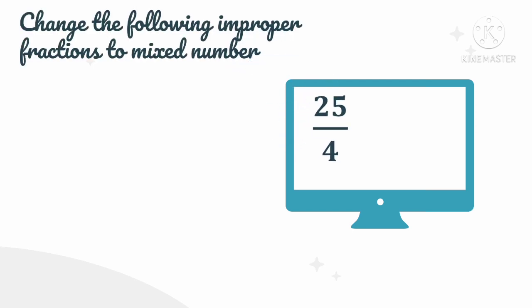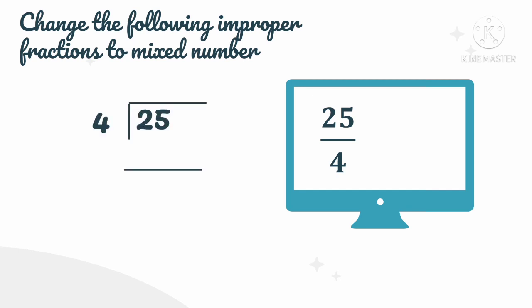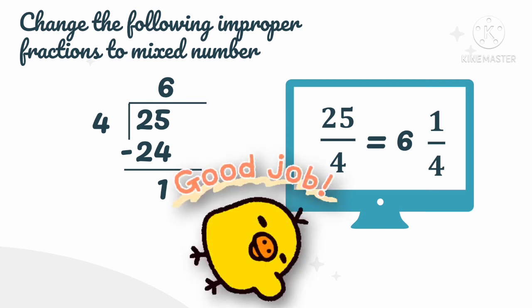Let's try other examples of changing improper fractions to mixed numbers. For example, 25 over 4. 25 over 4 is an improper fraction because the numerator is greater than the denominator. To change this into a mixed number, we divide 25 by 4. How many 4s are in 25? We can get 6. 6 times 4 is 24. Then subtract: 25 minus 24 is 1. So the quotient 6 becomes the whole number, the remainder 1 becomes the numerator, and the divisor 4 becomes the denominator. Therefore, 25 over 4 as a mixed number is 6 and 1 fourth.